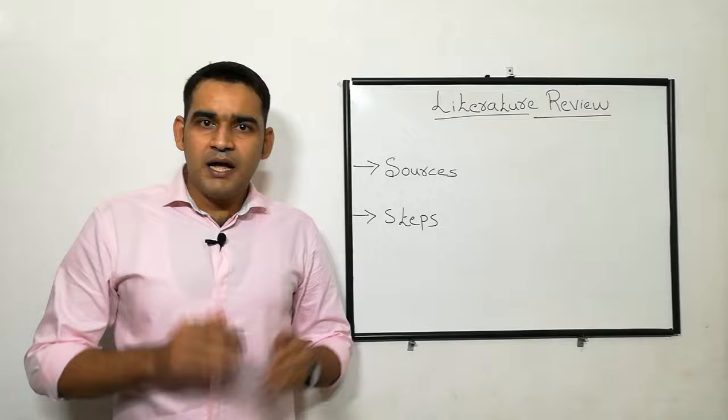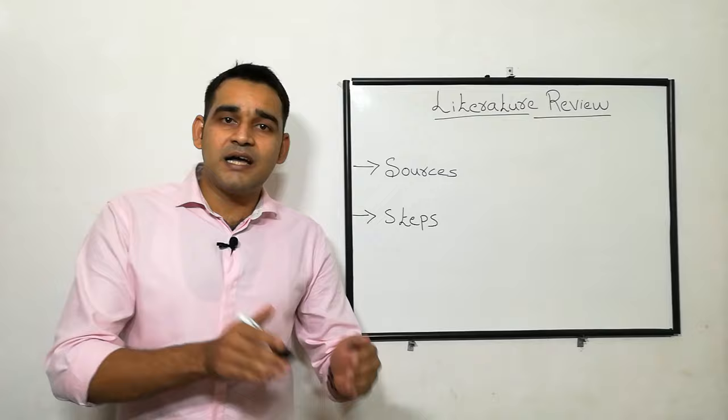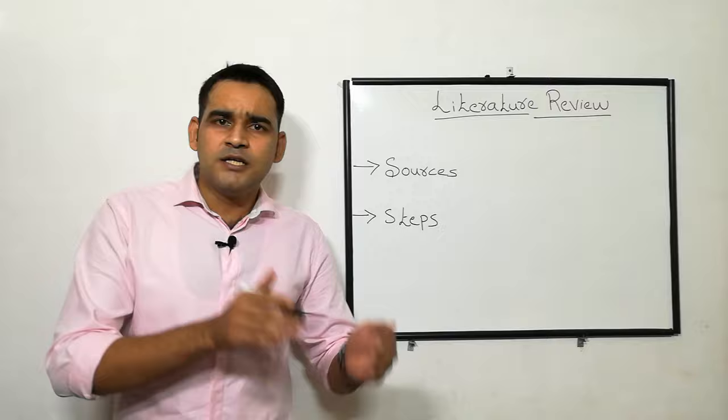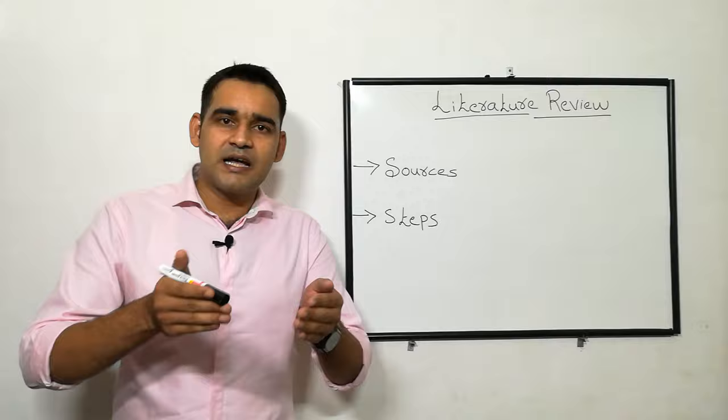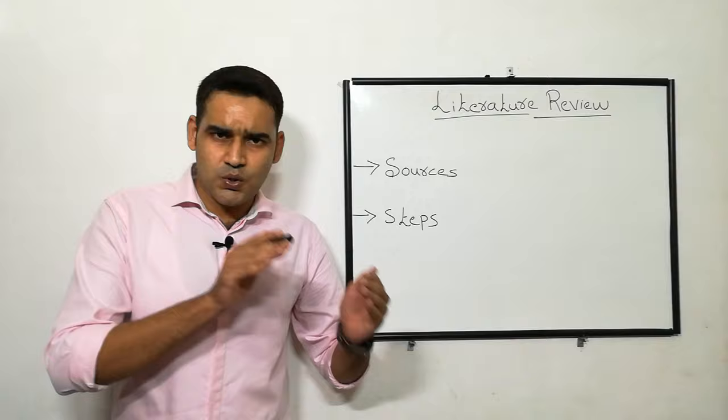The second step is to identify the relevant sources — from where you will get the knowledge and the literature. As already explained, through electronic sources, journals, or books, you can get the knowledge related to your topic. So identifying the relevant sources is the second step.